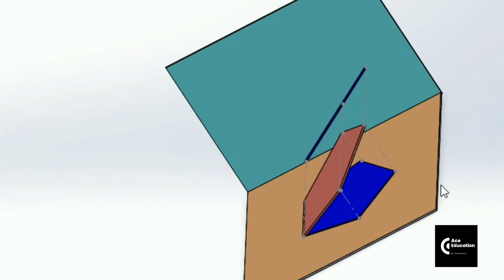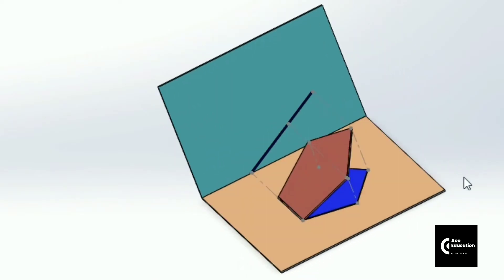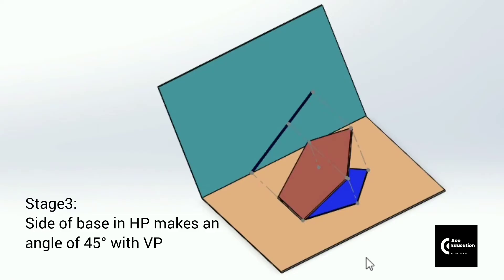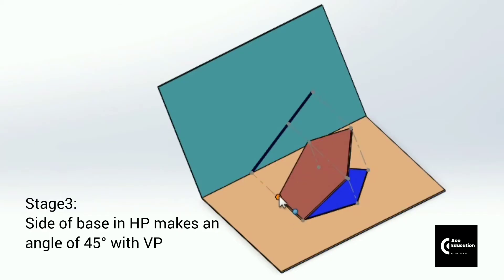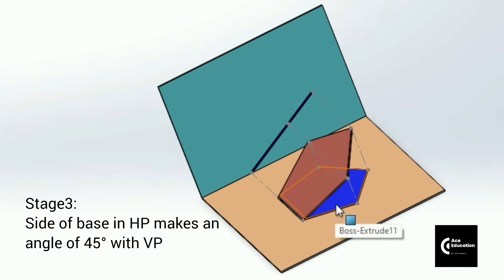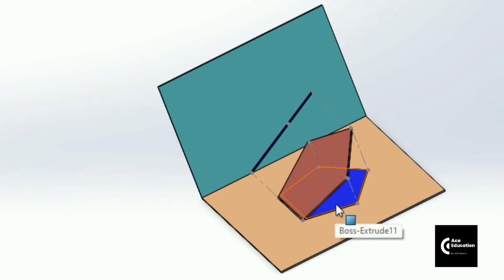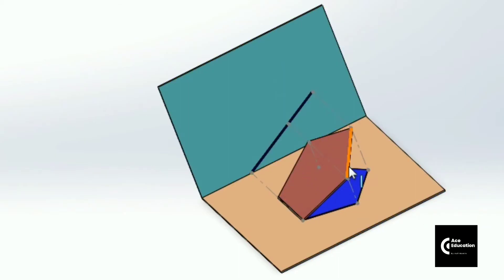Now we move to the third stage. The side of the base which is present in the horizontal plane will be making an angle of 45 degrees with the vertical plane. Right now this side of the base is perpendicular to the XY line. When it is tilted at a certain angle without changing its angle with the horizontal plane, we draw its projection on both the vertical plane and horizontal plane. First, let's tilt this plane so that this side makes a 45-degree angle.